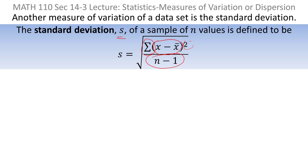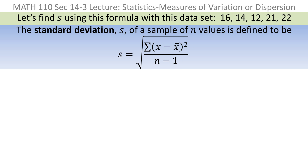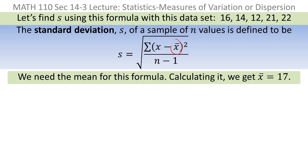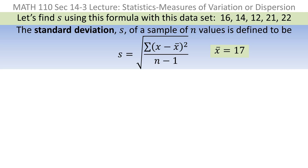Now let's use that formula to find the standard deviation of this data set: 16, 14, 12, 21, and 22. The formula has x-bar in it, so we calculate the mean first. The mean comes out to be 17, so x-bar is 17.